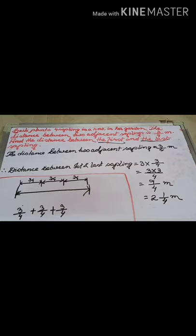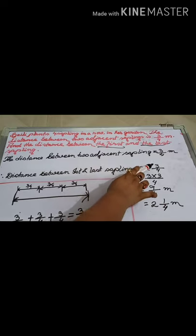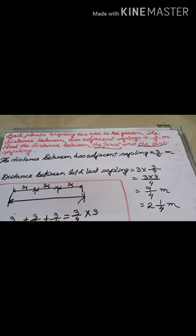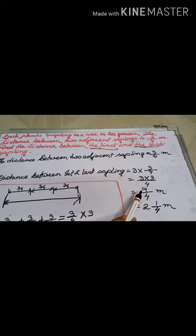Instead of repeated addition, as seen in previous videos, 3/4 added three times means 3/4 × 3. So the distance between the first and last sapling is 3 × 3/4. Numerator × numerator: 3 × 3 = 9, so the answer is 9/4. Converting to a mixed fraction, the distance is 2 and 1/4 metres.